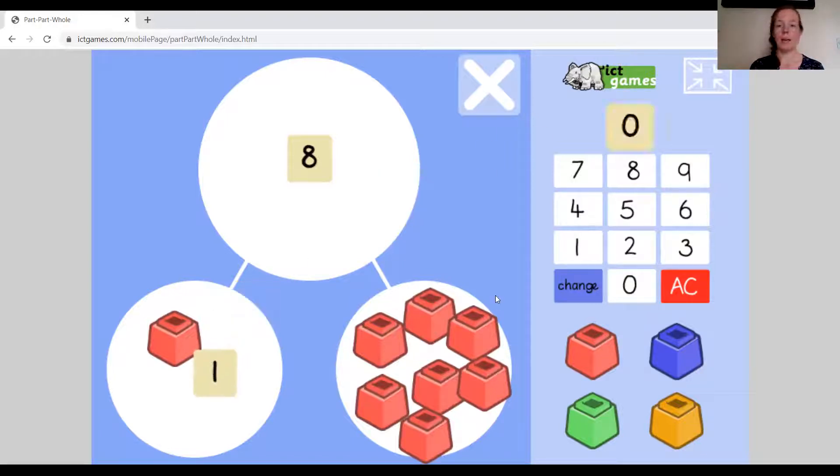Okay, and then I'm going to pop the numbers there as well just so we know. So we've got one there and seven there. So what does it tell us? One part is one, one part is seven, and the whole is eight.